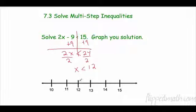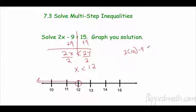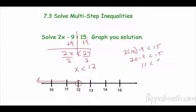Now I'm going to graph it. Open circle at 12, because I want all the numbers less than 12. I can check by plugging in 10: 2 times 10 minus 9 is less than 15. 20 minus 9 is 11, and 11 is less than 15 — it checks out.